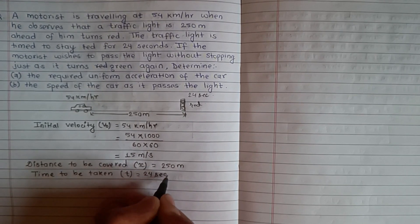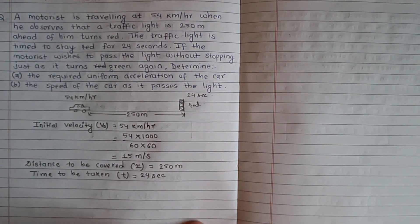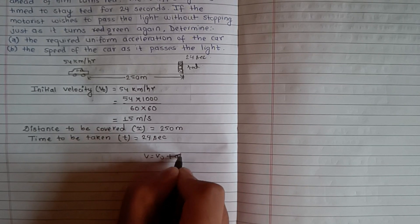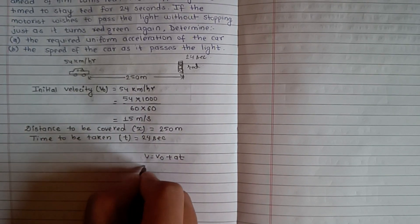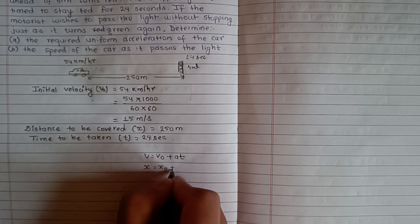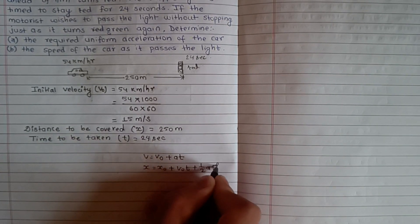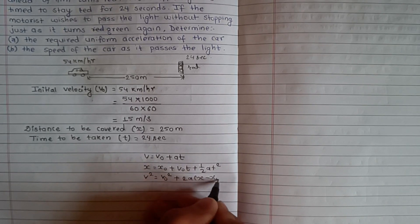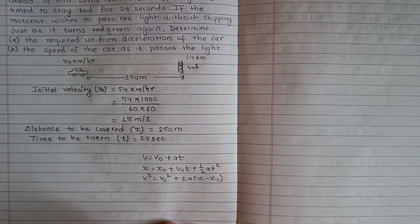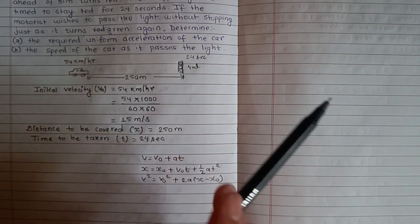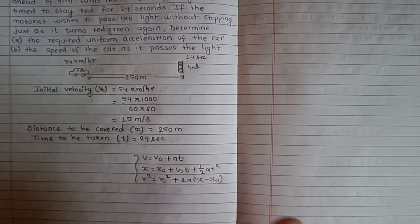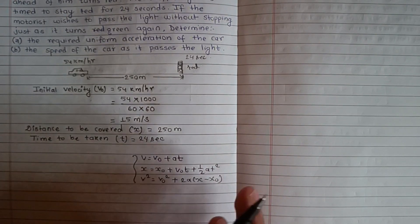For uniformly accelerated rectilinear motion, the equations of motion are: V equals V not plus AT, X equals X not plus V not T plus half A T squared, and V squared equals V not squared plus 2A times X minus X not.